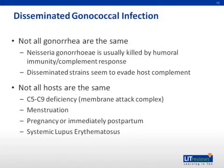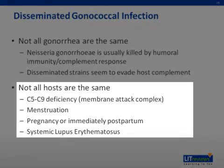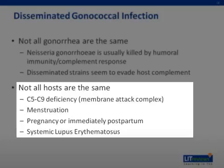There are instances in which disseminated gonococcal infection can occur, due to traits of the gonorrhea bacteria itself or characteristics of the host. Some strains of gonorrhea bacteria are able to evade the host's complement and humoral immunity responses, allowing dissemination throughout the body — the mechanisms behind this resistance are not yet completely clear and are currently a topic of research. Among host characteristics, complement deficiency, particularly C5 to C9 or the MAC complex, is a source of disseminated gonococcal infection. Females who are menstruating or pregnant or immediately postpartum are also more susceptible.